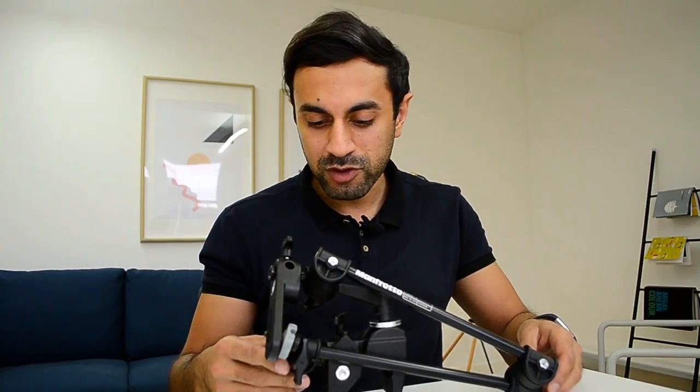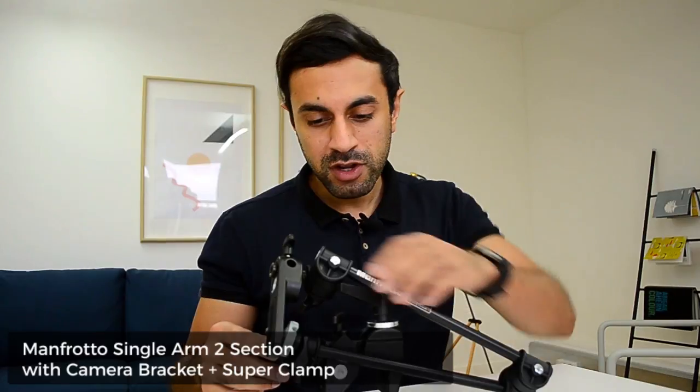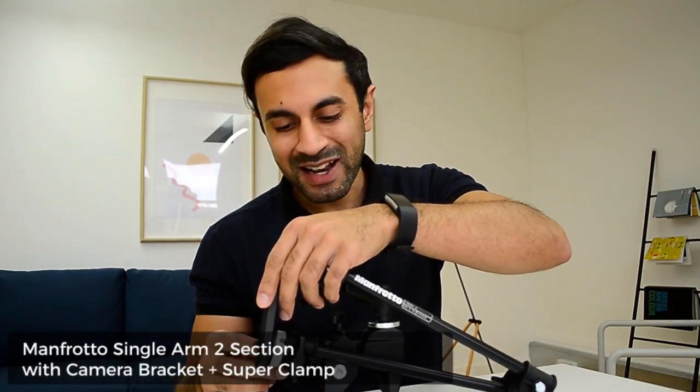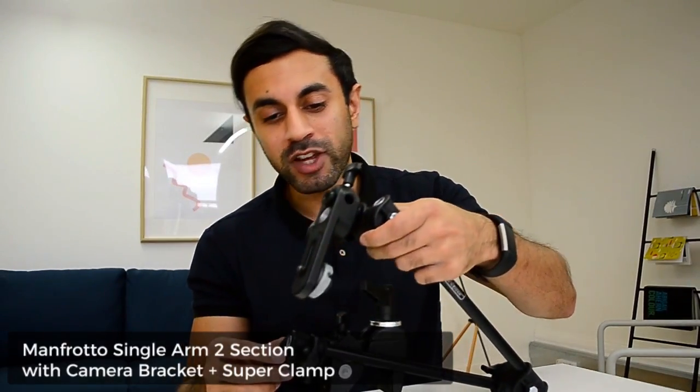So today I'm going to be giving you a quick review and setup guide on this bad boy which is the Manfrotto two section arm clamp. It's mainly used for cameras to get a bird's eye angle or desk shot of your video recordings or whatever you're trying to showcase.